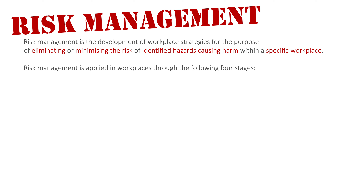Essentially, each and every workplace needs to look at their own environment, identify what the issues are, and then put in strategies to ensure that those issues hopefully will not cause harm to anyone that works within that workplace. There are four stages to risk management, and they go in a sequential order.